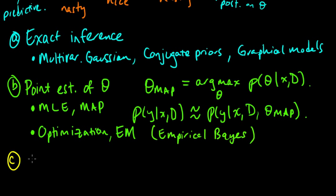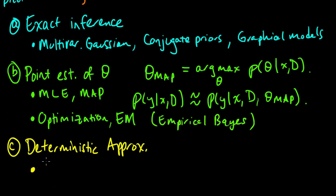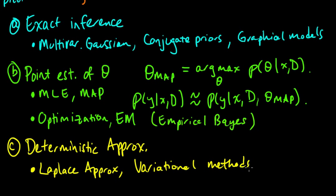The third option - and these are not necessarily disjoint, many methods will combine various of these different techniques - the third class of techniques is deterministic approximations. And these would include things like - by deterministic approximation I mean you're using some method to deterministically approximate this integral. Examples of this would be the Laplace approximation, another example is variational methods, and yet another is called expectation propagation.